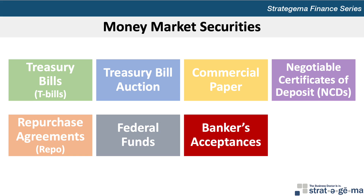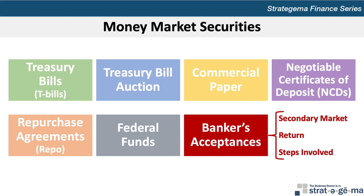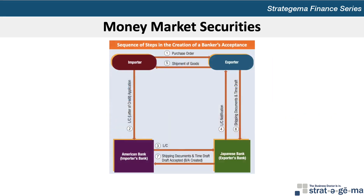A banker's acceptance indicates a bank accepts responsibility for a future payment and is commonly used for international trade transactions. Exporters can hold a banker's acceptance until the date payment is to be made, but they frequently sell the acceptance before then at a discount to obtain cash immediately through a secondary market. The investor's return on a banker's acceptance, like that on commercial paper, is derived from the difference between the discounted purchase price and the amount to be received in the future.